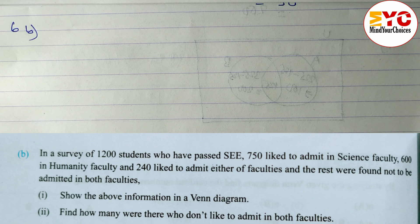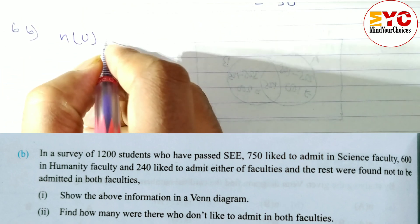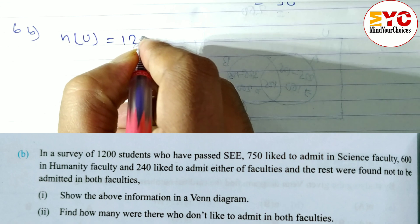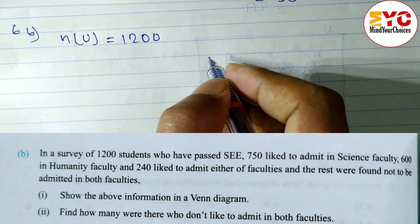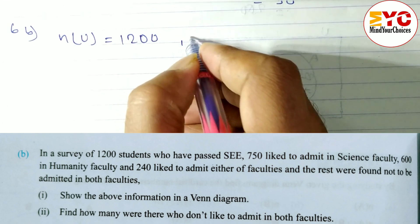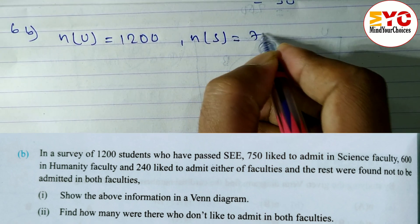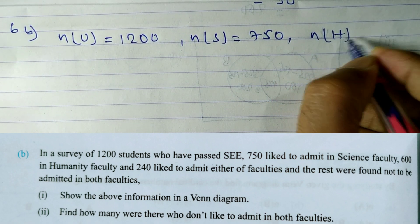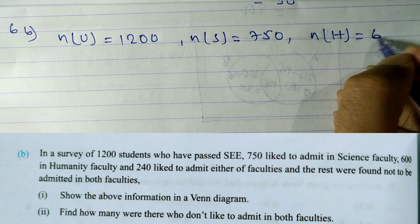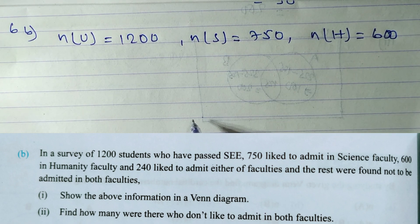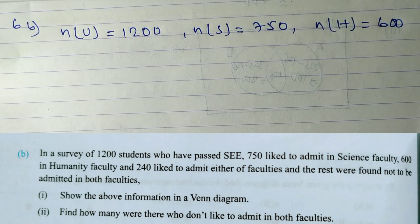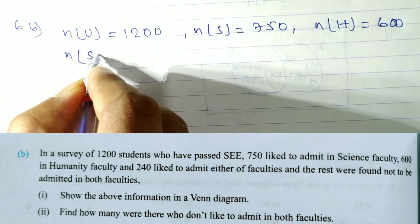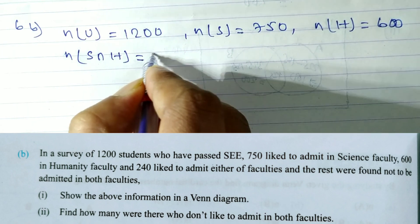So we write n(U) = 1200. n(S) = 750 — students who like science faculty. n(H) = 600 — humanity faculty. And 240 like either of the faculties, meaning both: S∩H = 240.